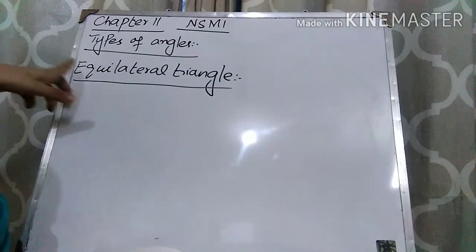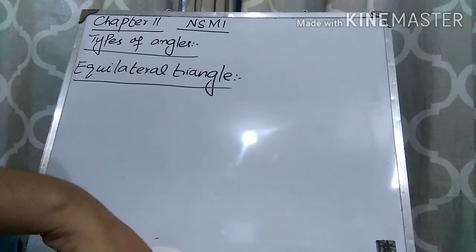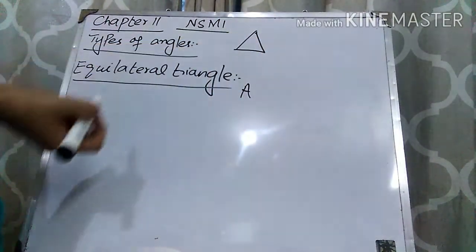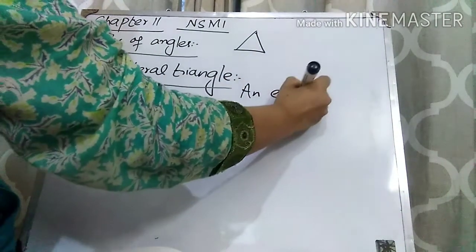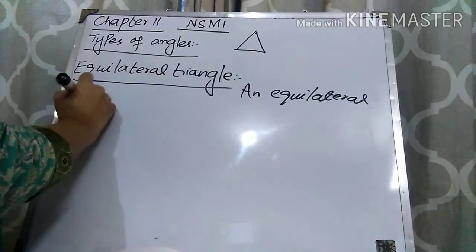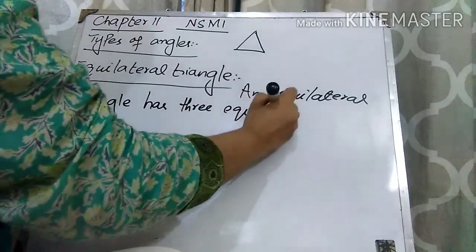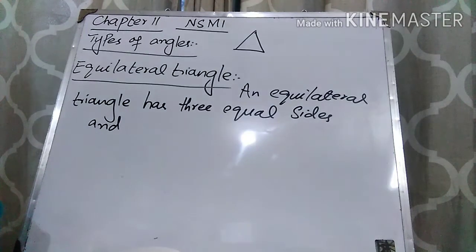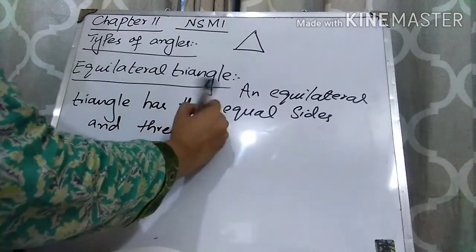Equilateral triangle. Equilateral — as you know, the prefix 'equi' means equal. So a triangle with equal sides is called an equilateral triangle. Here you can see a triangle with three equal sides. Always remember that if a triangle is having equal sides, it also has equal angles. An equilateral triangle has three equal sides and three equal angles.